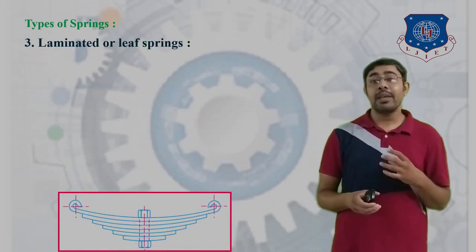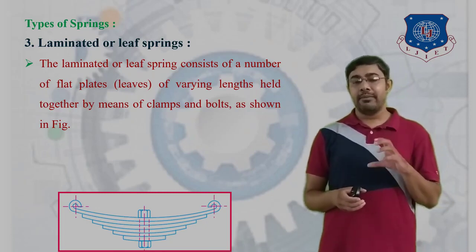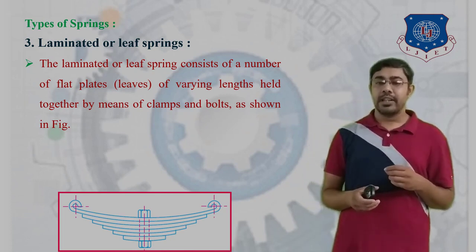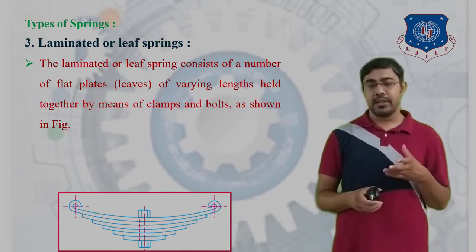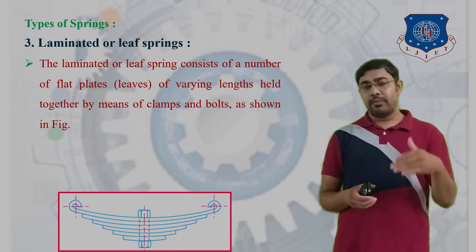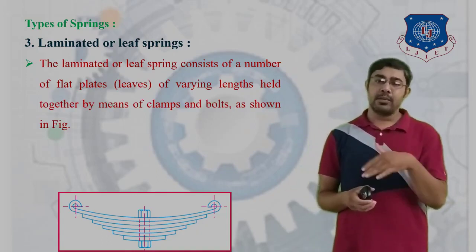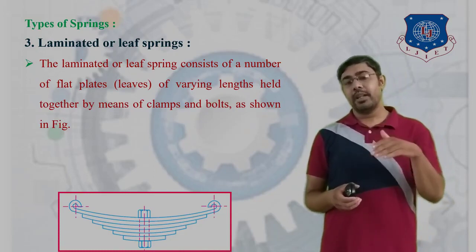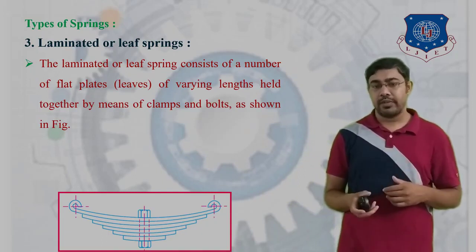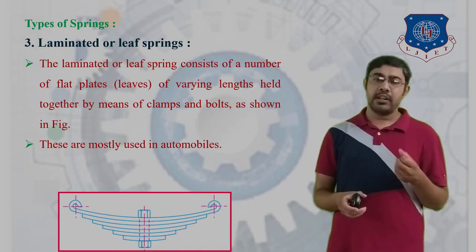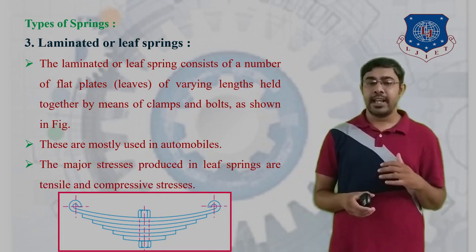The third type is the laminated or leaf spring. The laminated or leaf spring consists of a number of flat plates clamped together by means of bolts and clamps. These flat plates are known as leaves and are of varying lengths. This type of spring is mostly used in automobiles.